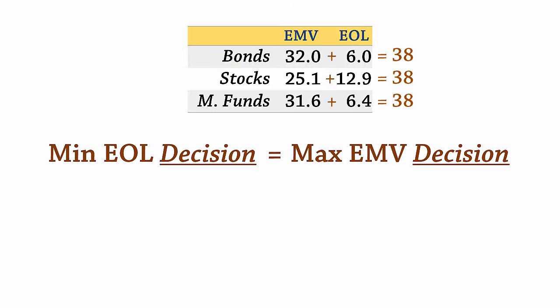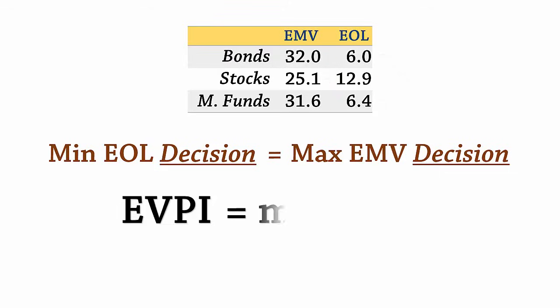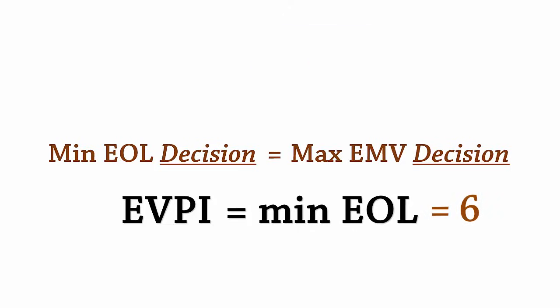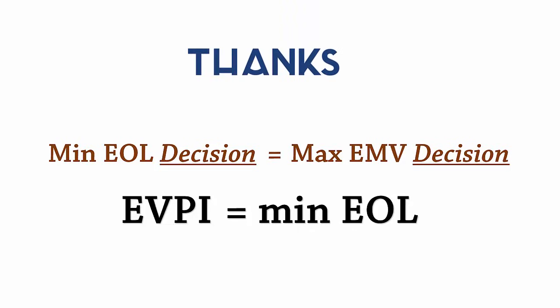Another interesting relationship is with EVPI. The expected value of perfect information is actually always the same as the minimum EOL. In an earlier video, we saw that the EVPI is 6, and so is the minimum EOL here. Note that if we have perfect information, then the expected regret or EOL is reduced to 0. In this example, we can say that with perfect information, the decision maker will reduce EOL by 6. And that's expected opportunity loss. Thanks for watching.